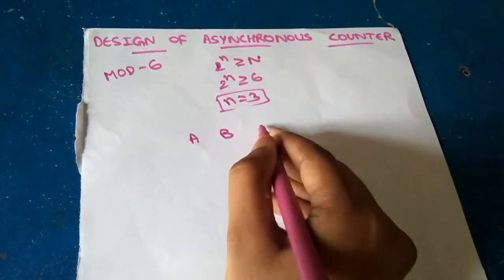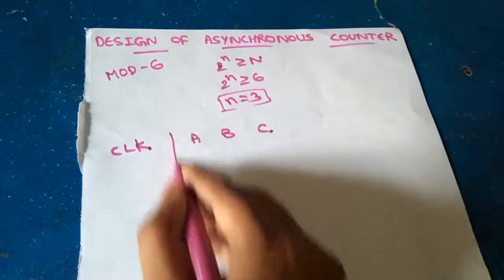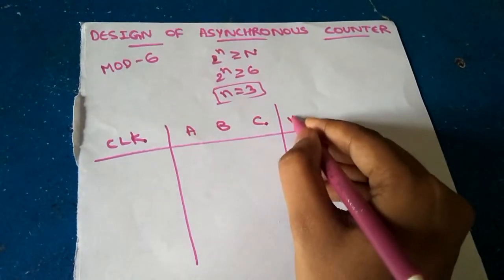So the 3 number of inputs are A, B and C and clock pulse. We will take clock pulse and the output is Y.